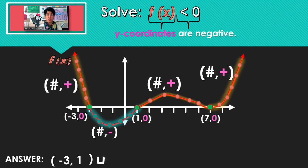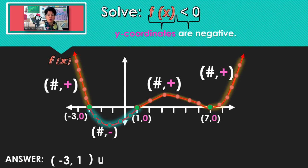We're only looking for where the y-coordinates are negative, so we don't have any other solutions. I'm going to remove the union — that is my final answer. X's between negative 3 and 1 are going to generate negative y-coordinates.